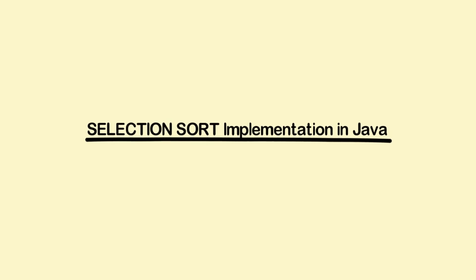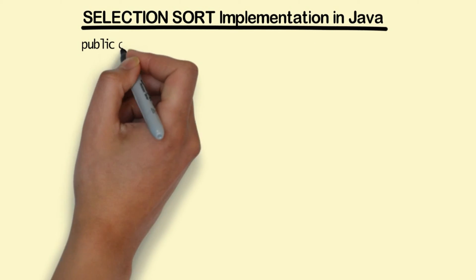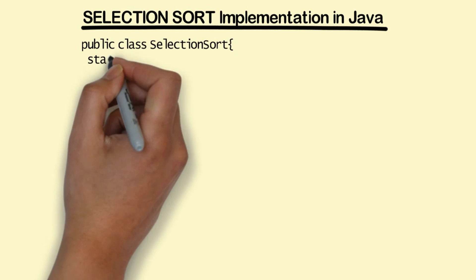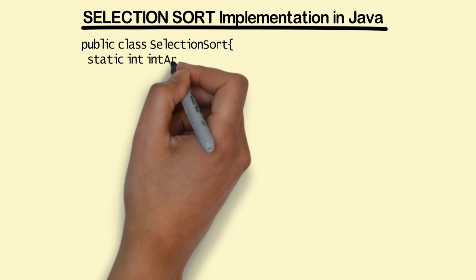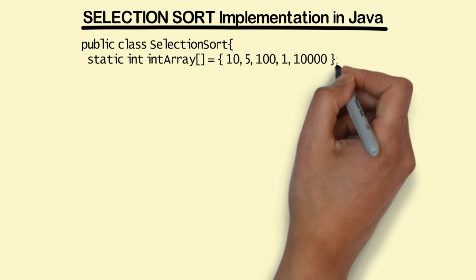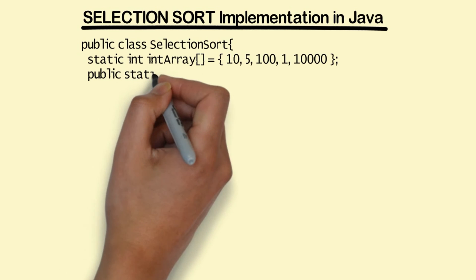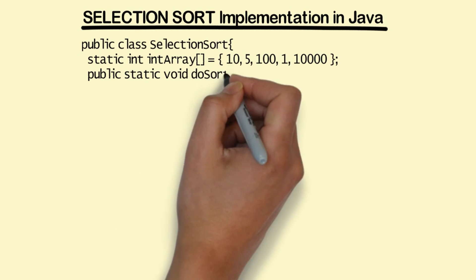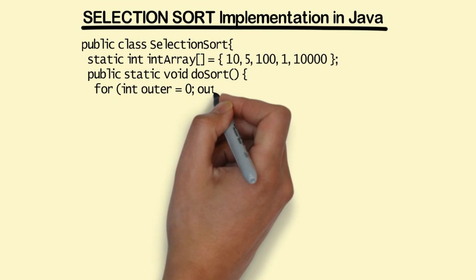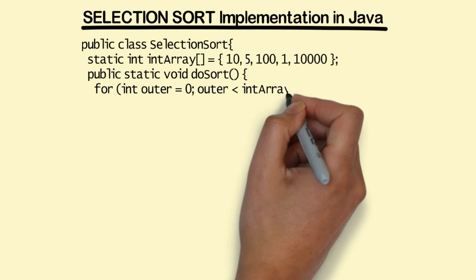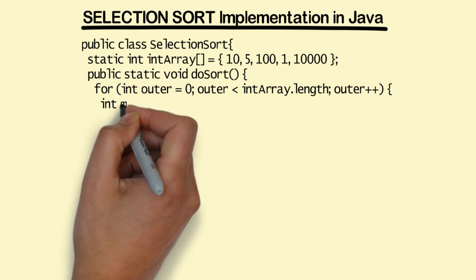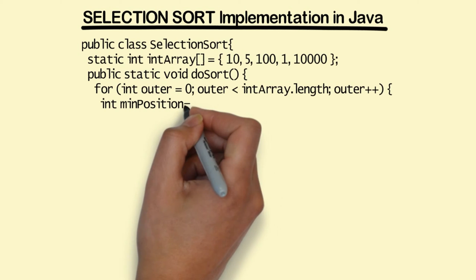We start our implementation by defining a class named SelectionSort. We then define our input list of numbers as a static array of primitive int, which contains 10, 500, 1, and 10000. Next we define our static method doSort which accesses this input array and sorts it. First we define our iteration-handling outer loop, where outer is the counter for iterations.